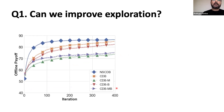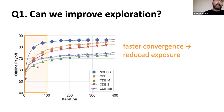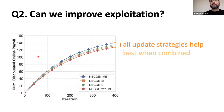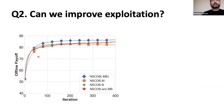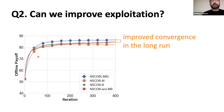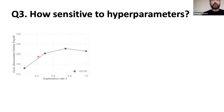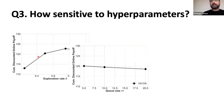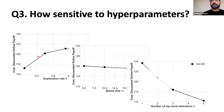Bottom line: null space exploration helps particularly for faster convergence at the beginning of sessions. We also looked at the contribution of exploitation through bi-directional updates and momentum — they all contribute, and contribute even further when combined, including for convergence in the long run. We also have hyperparameter analysis in the paper that reinforces these conclusions.